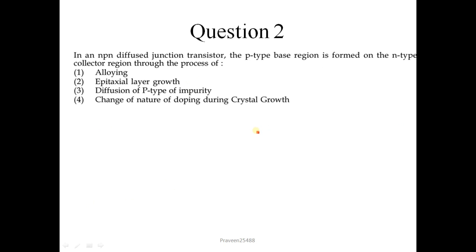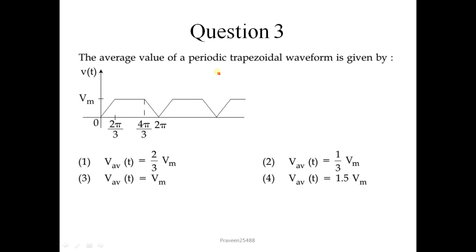Question number 2. In an NPN diffused junction transistor, the P-type base region is formed on the N-type collector region through the process of. So correct option is this: Diffusion of P-type impurity. Question 3. The average value of periodic trapezoidal waveform is given by. So to calculate the average value of any waveform, simply find the area under the curve of that waveform for first period and divided by that period 1 upon 2 pi.